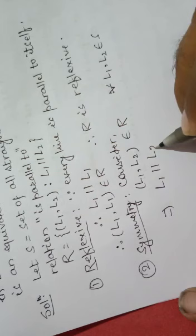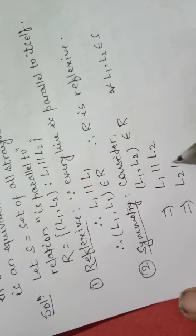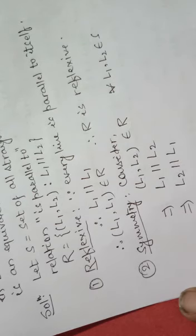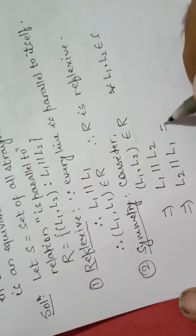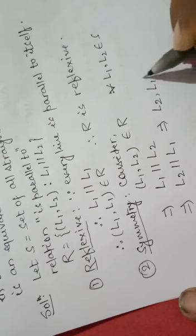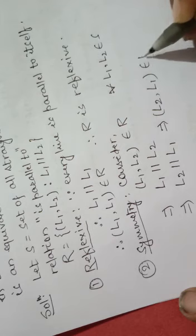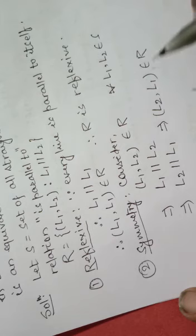Since L1 is parallel to L2, L2 is also parallel to L1. So we can say that (L2, L1) also belongs to R. Hence (L1, L2) belongs to R implies (L2, L1) belongs to R. Therefore R is symmetric.